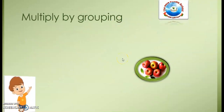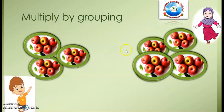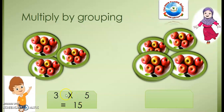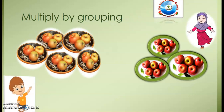In this next example, a boy has 5 plates and a girl has 3 plates of apples. Each of the boy's plates has 3 apples and each of the girl's plates has 5 apples. We need to find how many apples each person has. Do you think the boy has more apples than the girl? Keep your answer in mind, then we'll calculate and see.